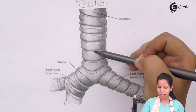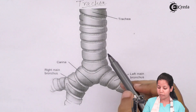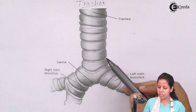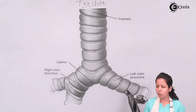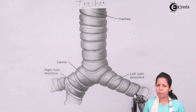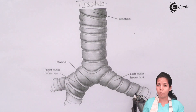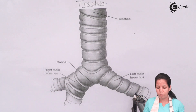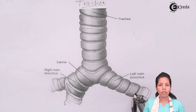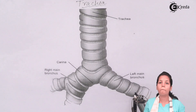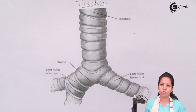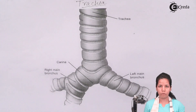Also, your trachea or windpipe is further divided into short branches which are termed as bronchus or bronchi. And at the end of this bronchus or bronchi there are bag-like structures which are termed as alveoli.